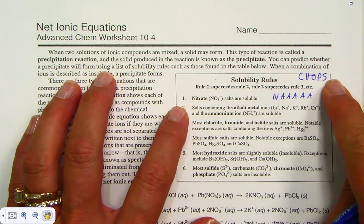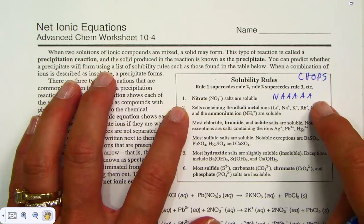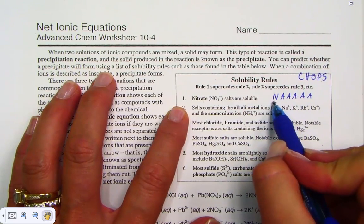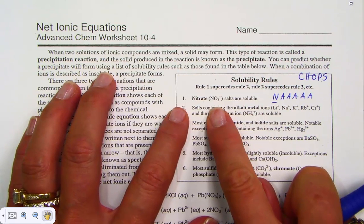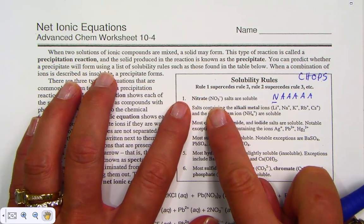CHOPS NA: The N stands for nitrates. This polyatomic ion nitrate, no matter what it's hooked to in the first name, are soluble.